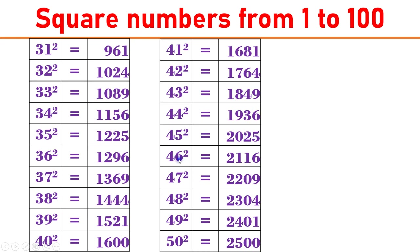46 square equals 2116. 47 square equals 2209. 48 square equals 2304. 49 square equals 2401. 50 square equals 2500.